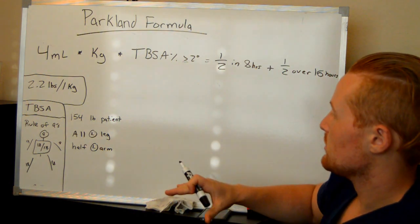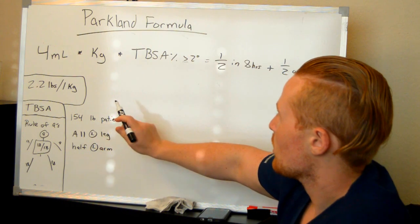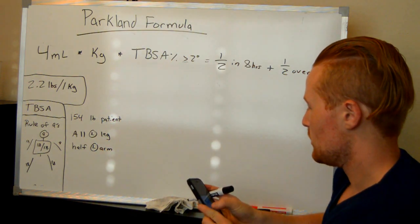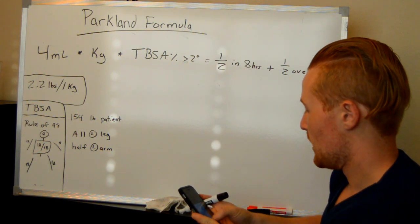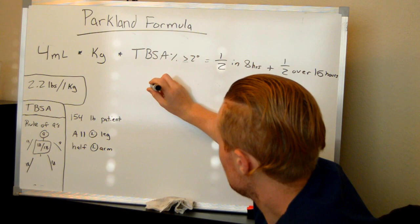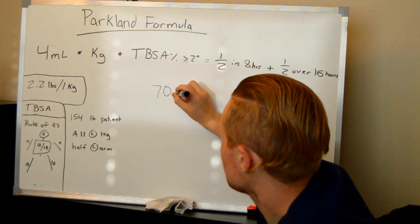Let's break into an example here. So we have a 154 pound patient. Well, let's go ahead and figure out what that is. So 154 divided by 2.2, that gives us 70 kilograms exactly.